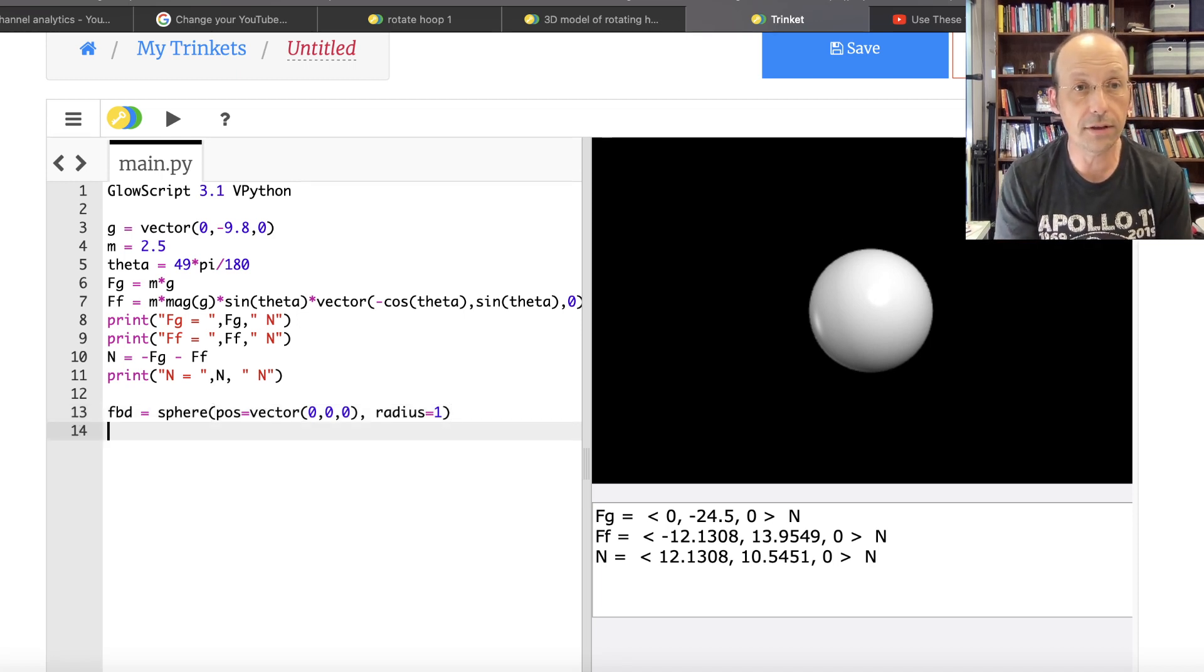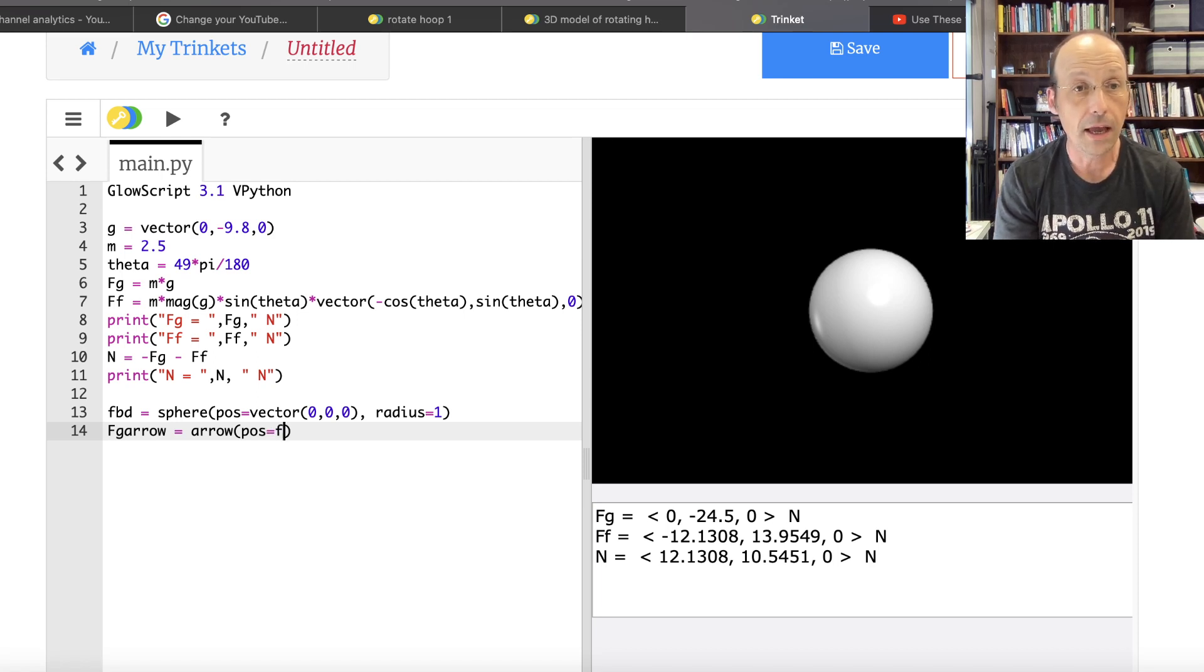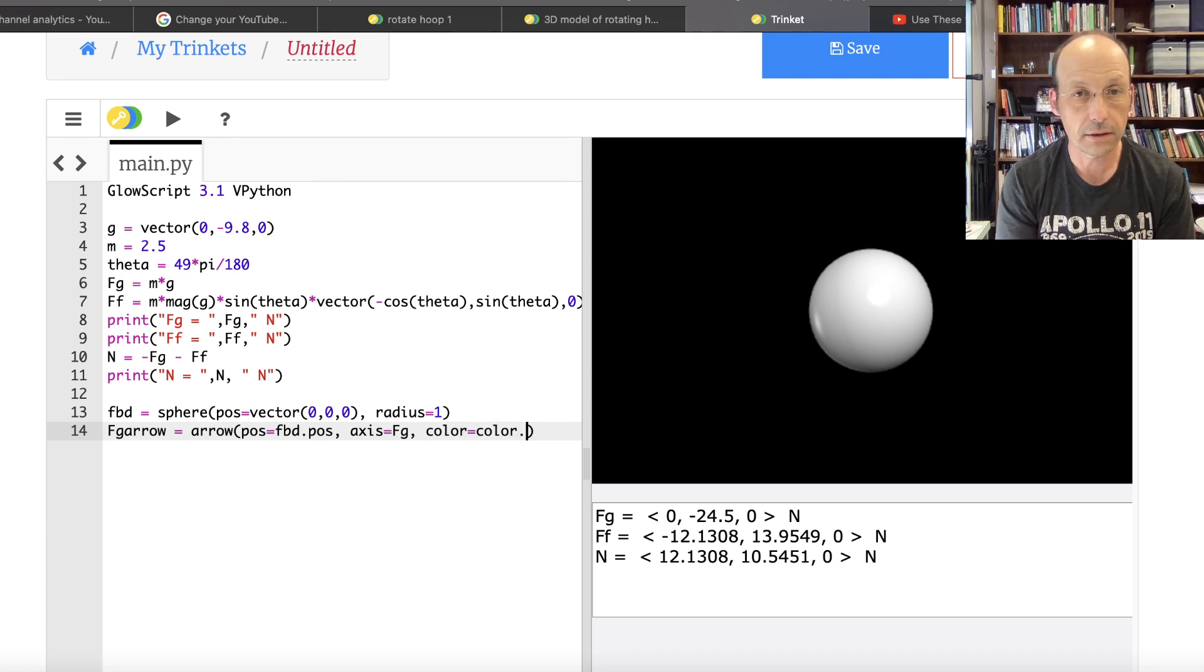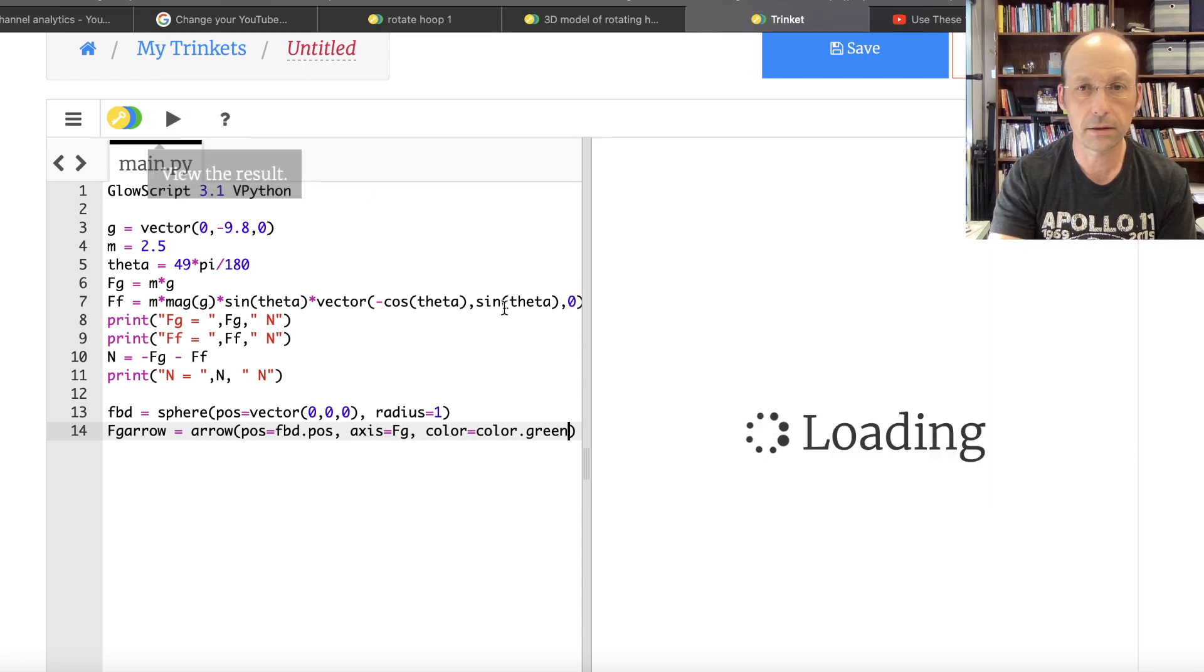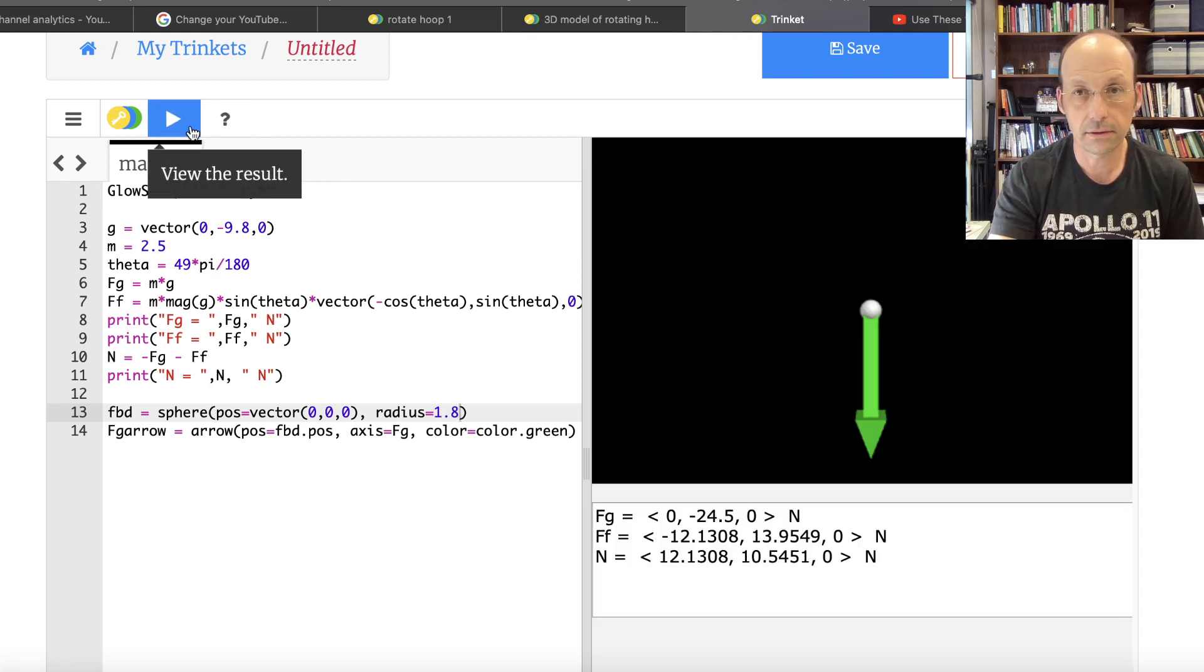Now let's make an arrow. So let's call this FG arrow equals an object of type arrow. In Python, an arrow has a couple of really important attributes. Number 1, it has a position which is the location of the start of that arrow. And then axis is a vector from that start to the finish. So I want this to start at FBD. So I can say the position is FBD.POS. And then the axis is going to be equal to FG. The axis is going to be the vector of the force. Let's give it a color too. I'm going to make this green. So color equals color.green. And there's my arrow. See, this is in three dimensions. So there's my gravitational force arrow. There's my dot. I'm going to make that a little bit bigger. Let's make that radius 1.8. That's good. Perfect.